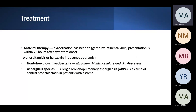Antiviral therapy: bronchiectasis can be triggered by influenza, so oseltamivir or other antivirals can be used, especially within the first 72 hours of symptoms. Non-tuberculous mycobacteria (NTM) can also be a cause, requiring prolonged treatment — not the usual short 14-day course. Allergic bronchopulmonary aspergillosis (ABPA) as a cause also requires a prolonged and different treatment approach.